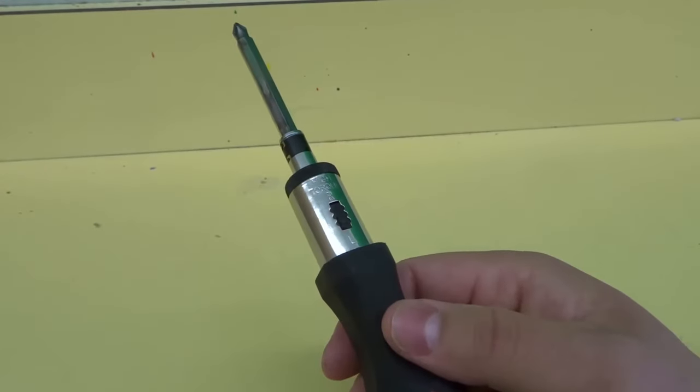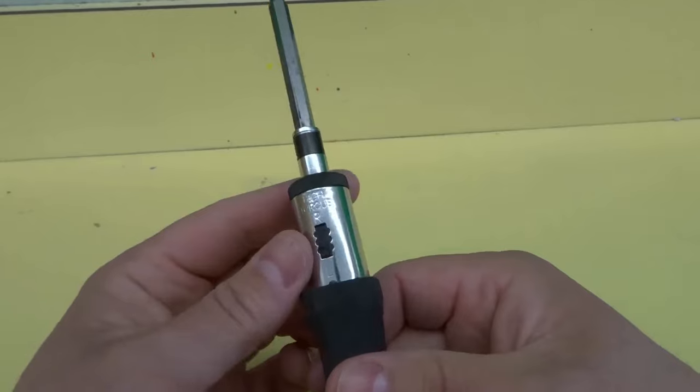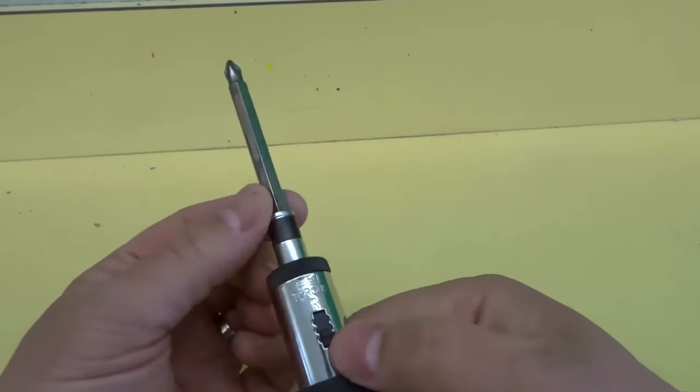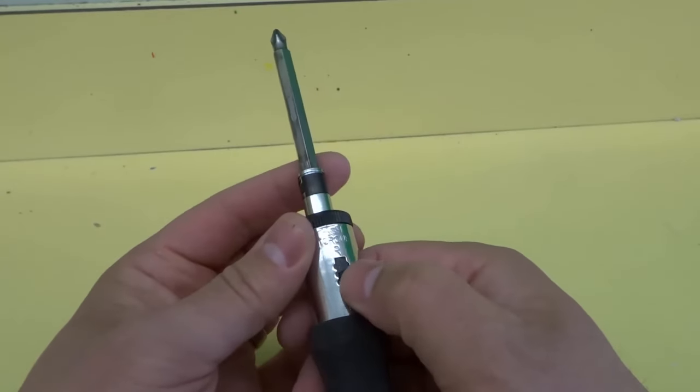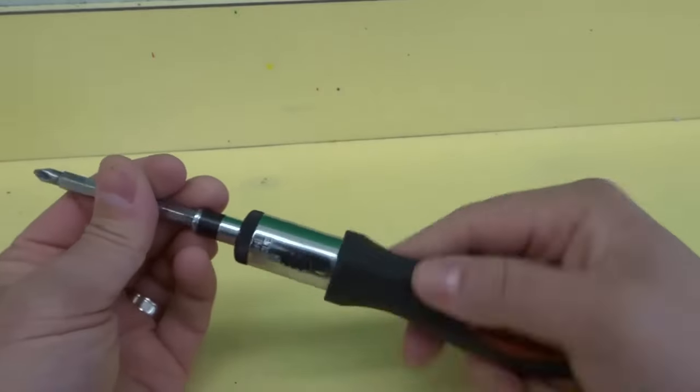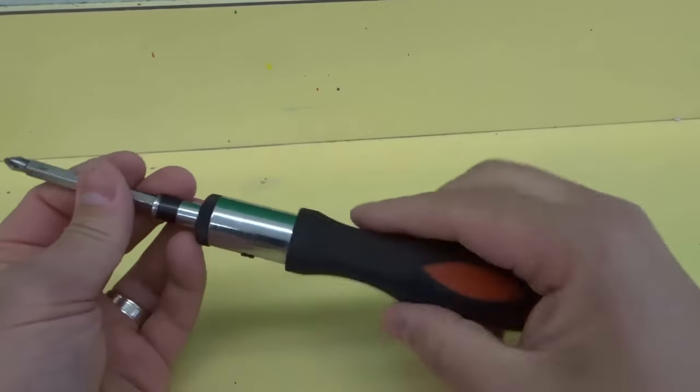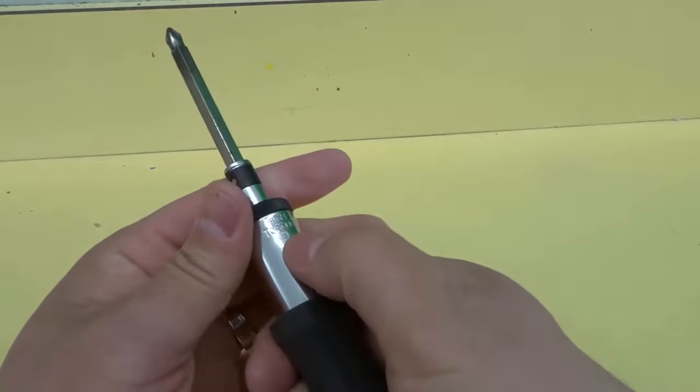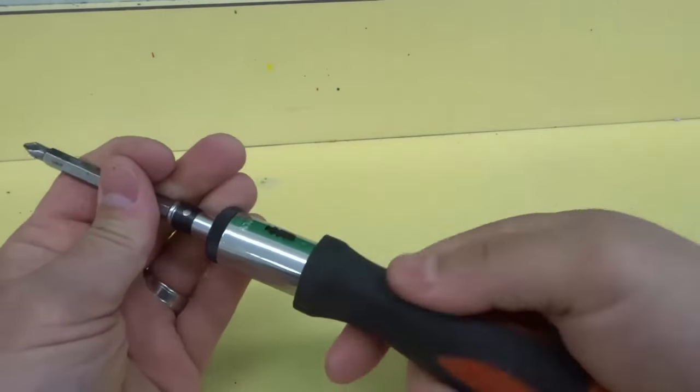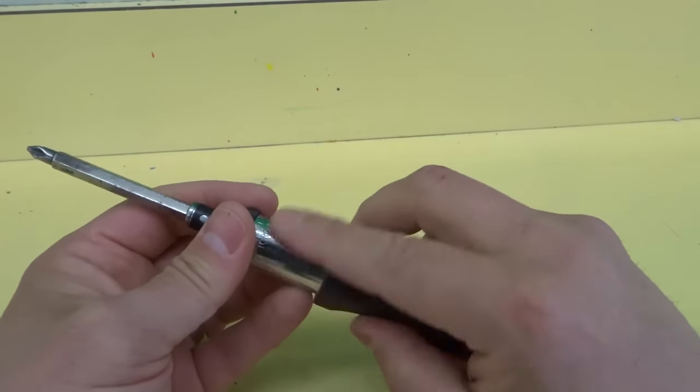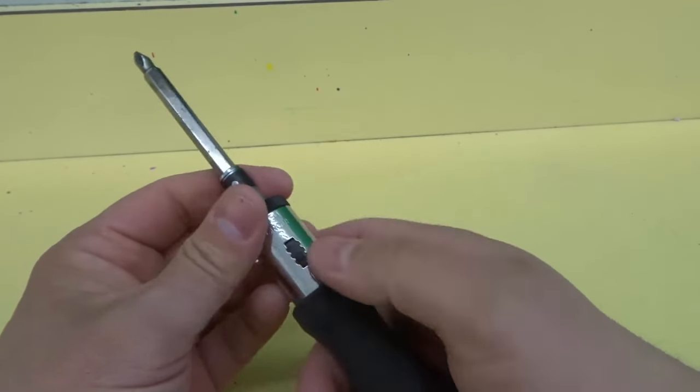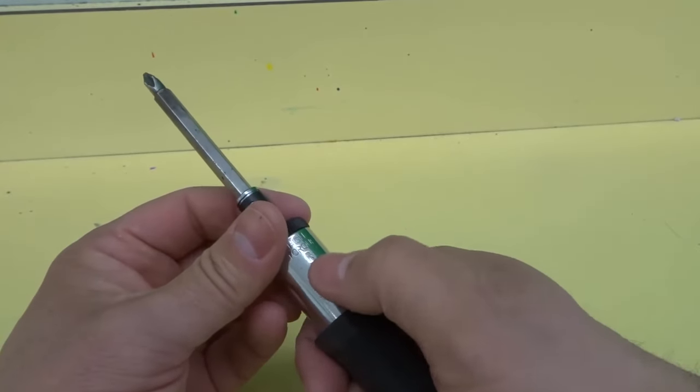That's how to use a ratcheting screwdriver. It's actually really easy. All that you need to do is put your screwdriver bit in place. Then you're either going to leave it in the middle for it to be a regular stationary screwdriver, or you push it up to ratchet it in one direction or push it down to ratchet it in the other direction. Sometimes the toggle will be left and right, but most of the time it's going to be up and down just because it's easier to do when you're actually using the screwdriver.